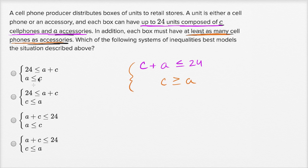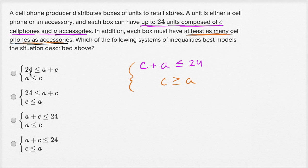Those are the constraints. So let's see which of these choices match them. This one says 24 is less than or equal to A plus C. No, it should be the other way around — 24 should be greater than or equal to A plus C. This is saying that A plus C needs to be 24 or above, but they say each box can have up to 24 units. They can't have 25 units or anything like that. So this is saying the opposite: C plus A has to be less than or equal to 24, while this choice says 24 has to be less than or equal to C plus A. So we can just rule that one out.